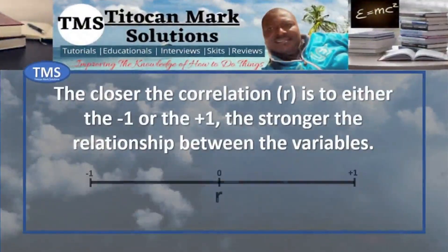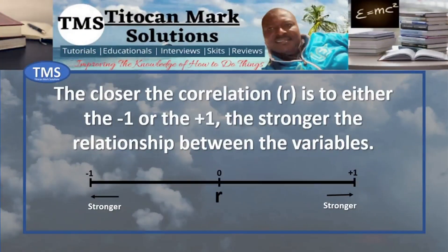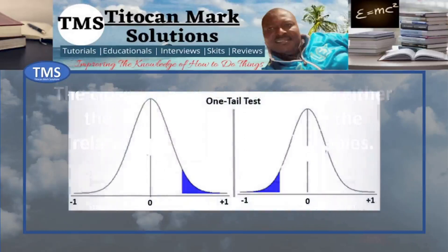The closer the correlation is to either minus 1 or plus 1, the stronger the relationship between the variables. However, correlation analysis would be a one-tailed test if you are only interested in the direction of the relationship — that is, whether the correlation is in a positive or negative direction.